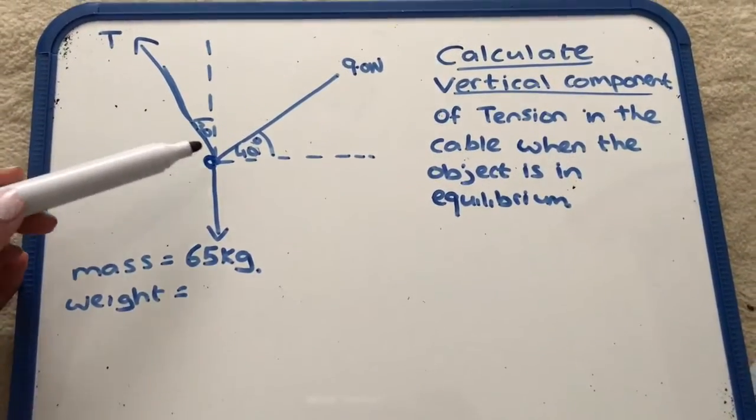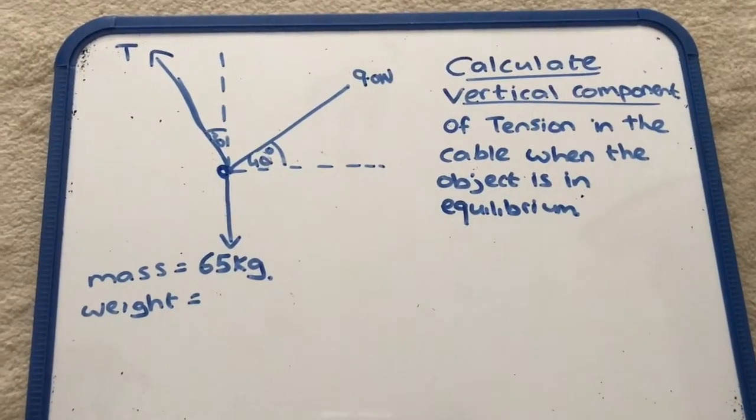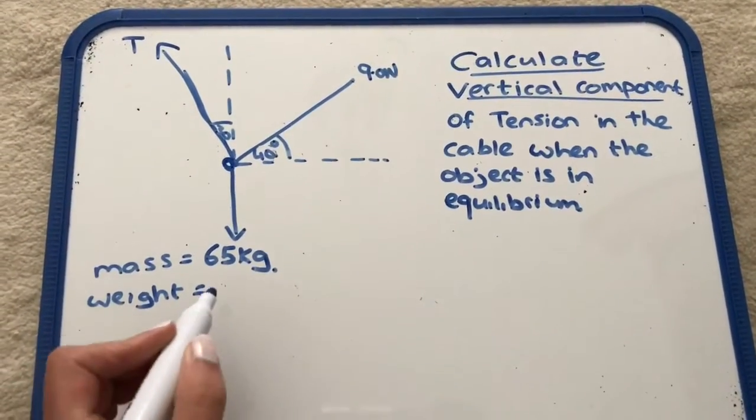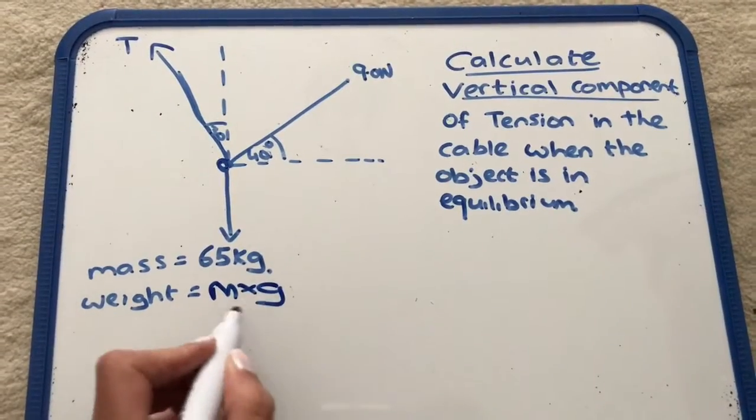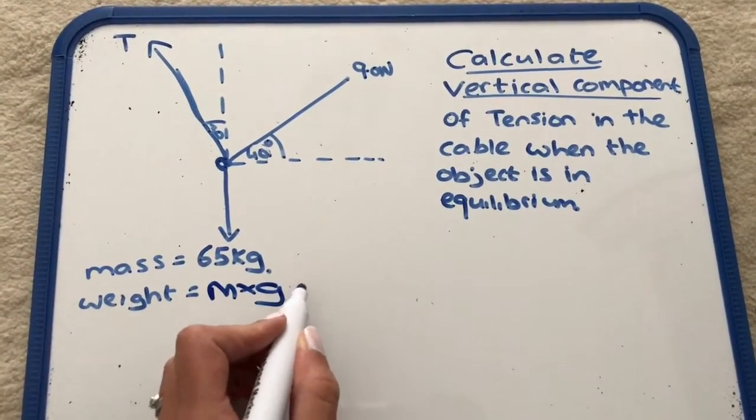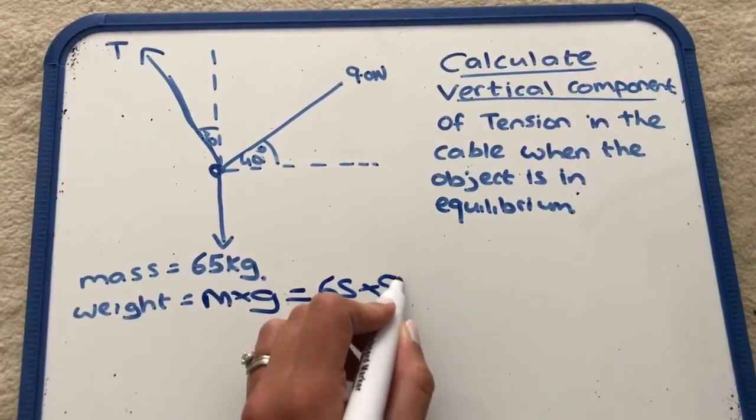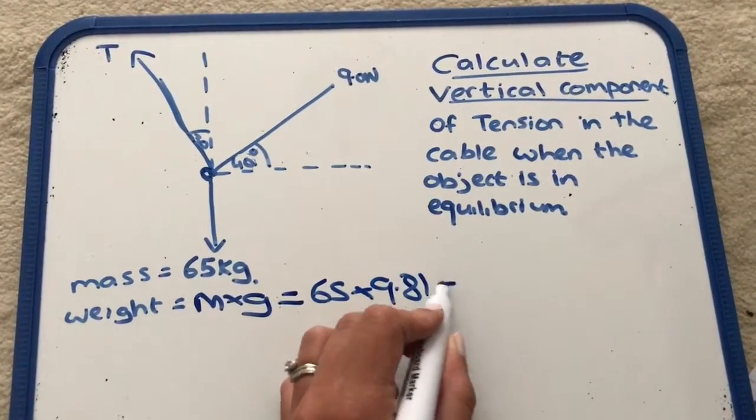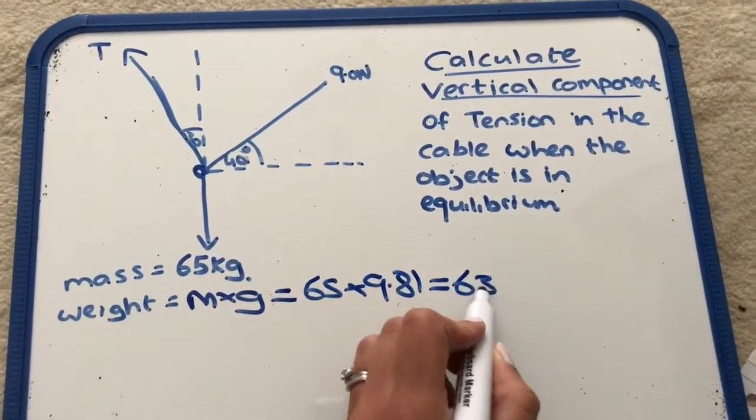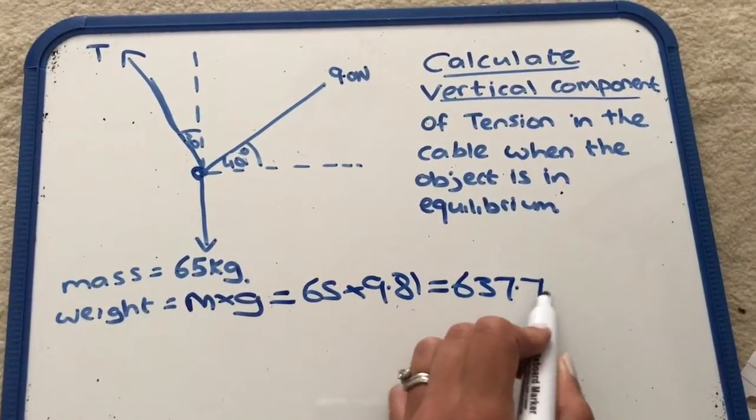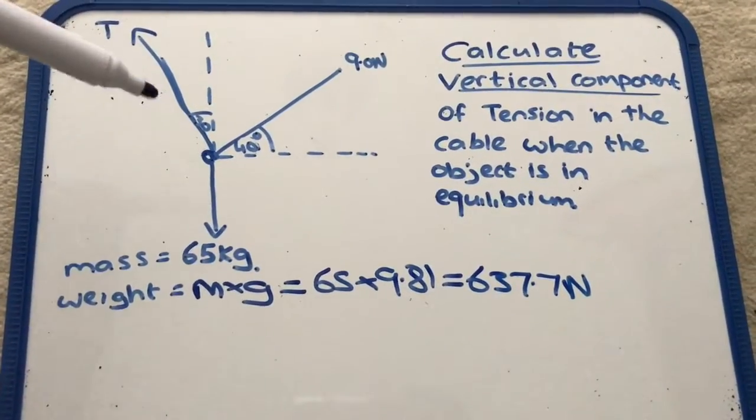It has a mass of 65 kilograms acting down, so it will also have a weight. To find our weight, it is our mass times our gravity, and our gravity is 9.81, so it is 65 times 9.81, which will give us a value of 637.7 newtons.